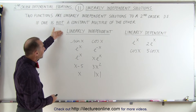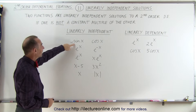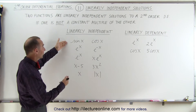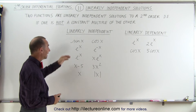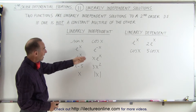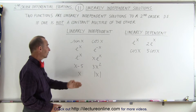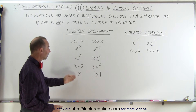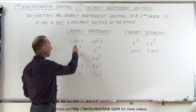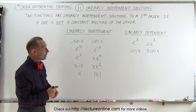Here we have a list of linearly independent solutions: sine of x and cosine of x — you cannot multiply sine of x by a constant and get cosine of x. Also e to the x and e to the minus x; e to the x and x times e to the x; x minus 5 and 3x squared; and x and the absolute value of x. In each case, you cannot multiply one by a constant to get the other, so they are linearly independent.